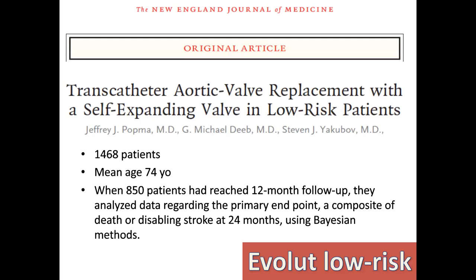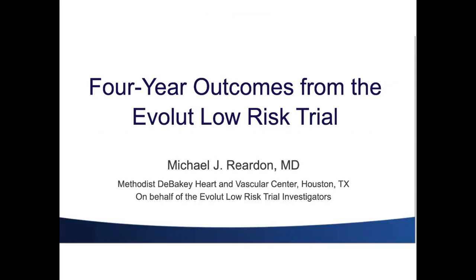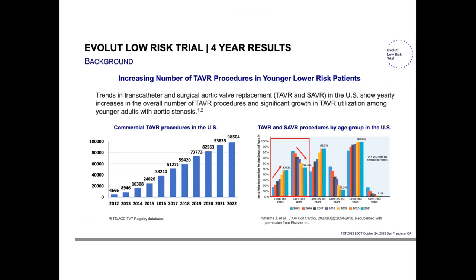For the Evoluted Low-Risk patients, 1,400 patients were included with a mean age of 74. When 850 patients reached the 12-month follow-up, they analyzed the primary composite endpoint of death or disabling stroke at 24 months using the Bayesian method. These are the recent four-year outcomes for the Evoluted Low-Risk trial. As shown in the TVT registry, there is a yearly increase in the overall number of TAVR procedures and significant growth in TAVR utilization among younger adults with aortic stenosis in the US.